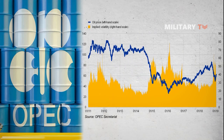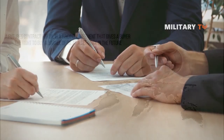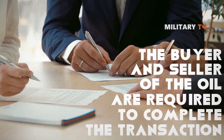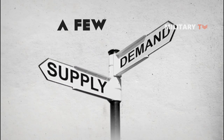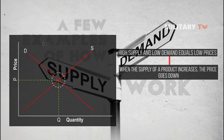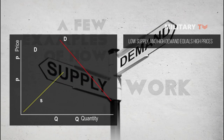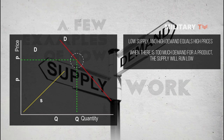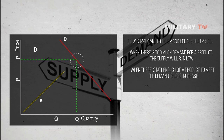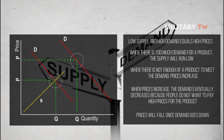The excess supply of oil caused oil prices to fall sharply. While supply and demand impact oil prices, it is actually oil futures that set the price of oil. A futures contract for oil is a binding agreement that gives the buyer the right to buy a barrel of oil at a set price in the future, with the buyer and seller required to complete the transaction on a specific date. High supply and low demand equals low prices — when supply increases, price goes down, and demand rises. Low supply and high demand equals high prices — when demand outpaces supply, prices increase, and demand eventually decreases when prices get too high.